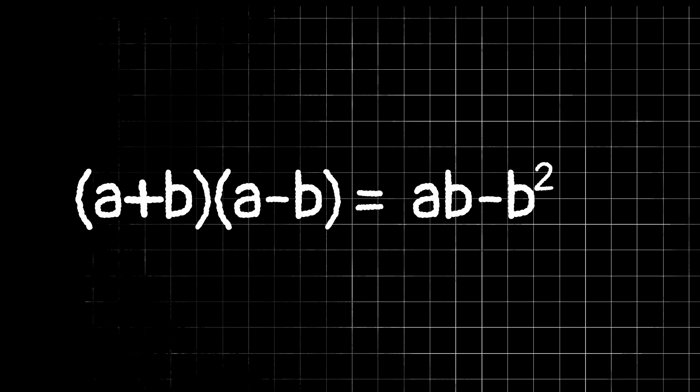And if you notice on the other side of our equation, both terms are being multiplied by b, so we can pull out that greatest common factor of b and leave us with b times a minus b.